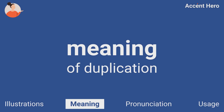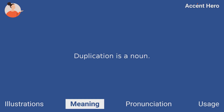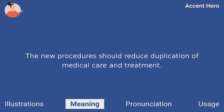Meaning. Duplication is a noun. Duplication is the act of making a copy of something. For example, you can say: the new procedure should reduce duplication of medical care and treatment.